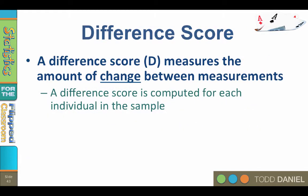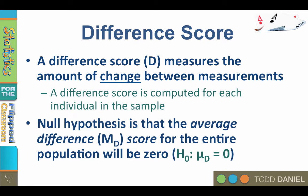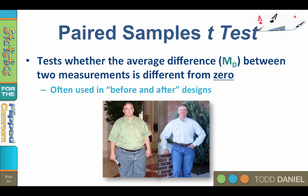At the heart of the paired samples t-test is the difference score. A difference score, abbreviated as capital D, measures the amount of change between measurements. D equals the final score minus the beginning score. A difference score is computed for each individual in the sample. The null hypothesis is that the average difference in the entire population will be 0, or mu sub d equals 0. The paired samples t-test is a parametric procedure that tests whether the average difference between two measurements is statistically significant from 0.